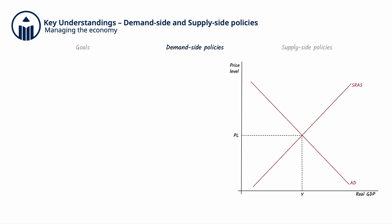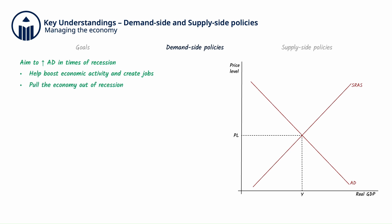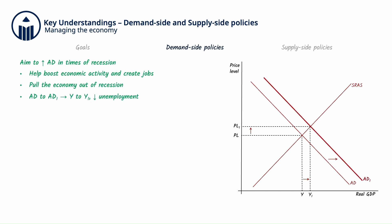Both fiscal and monetary policies aim to increase AD in times of recession to help boost economic activity and create jobs, and pull the economy out of recession. We call these expansionary policies. Expansionary demand-side policies will shift the AD curve to the right to AD1, leading to higher output from Y to Y1, thus creating jobs and lowering the unemployment rate as well.